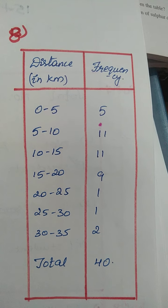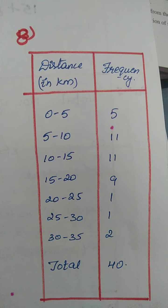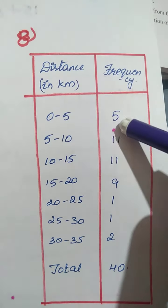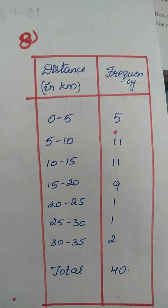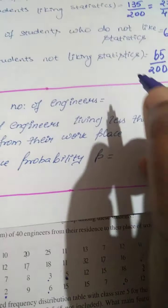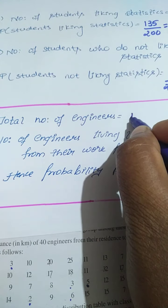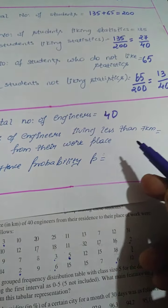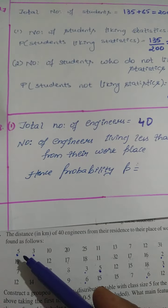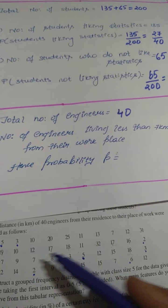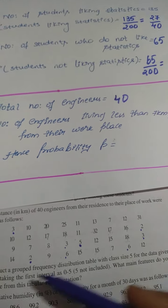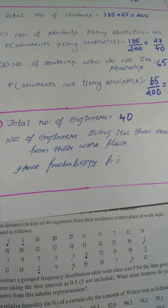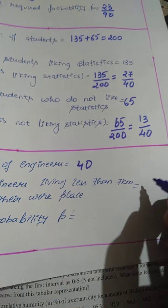Your first question was who are travelling less than 7 kilometers. In my grouped data, 0 to 5 kilometers there are already 5 members. I have to check for 7 kilometers. So, here is your solution children. Total number of engineers is 40. Number of engineers leaving less than 7 kilometers from their workplace — counting: 1, 2, 3, 4, 5, 6, 7, 8, 9. So, 9 workers are 7 kilometers and less. Hence, I should write here 9.